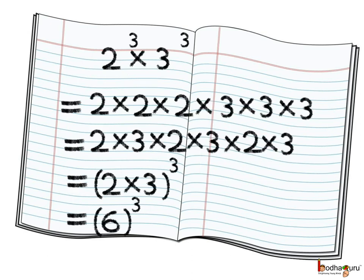But what if bases are different but the exponents are same? For example, 2 to the power 3 multiplied by 3 to the power 3. We can break it as 2 multiplied by 2 multiplied by 2 multiplied by 3 multiplied by 3 multiplied by 3. If we rearrange to make the groups of 2 multiplied by 3, then we get 3 groups of 2 multiplied by 3.